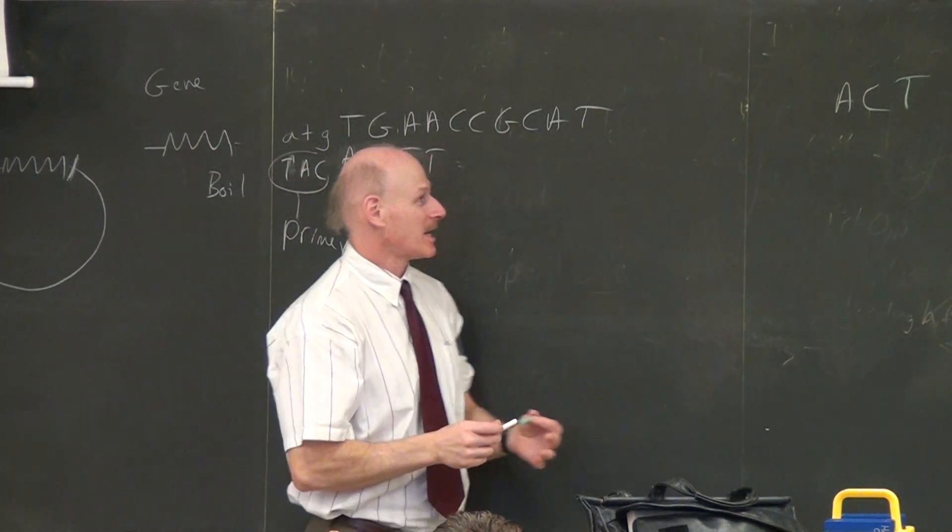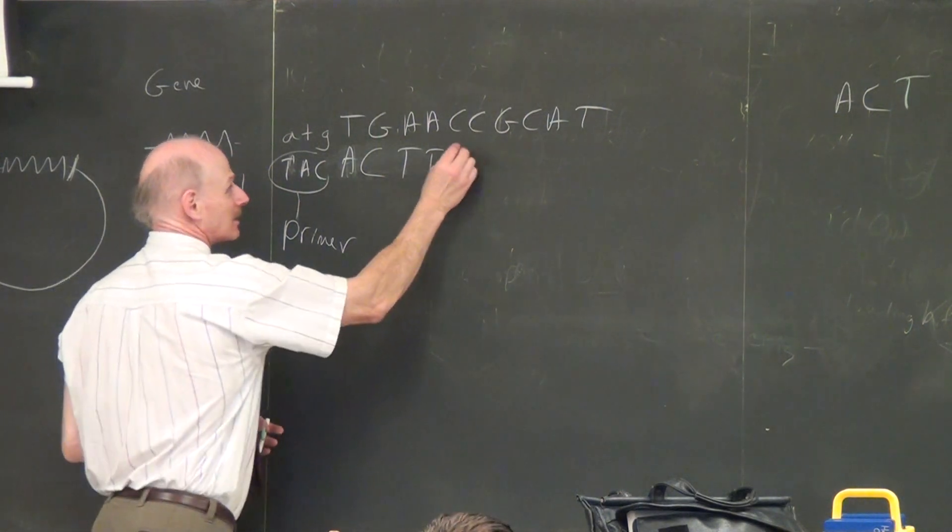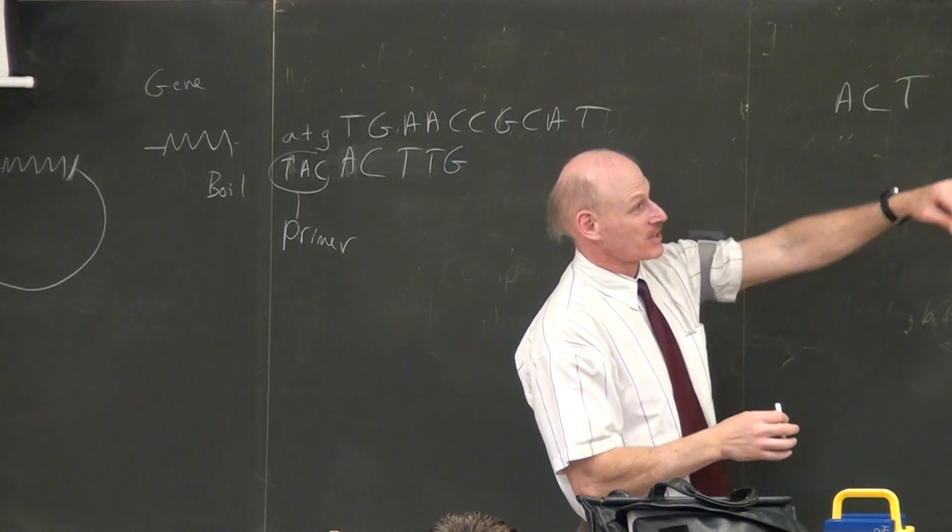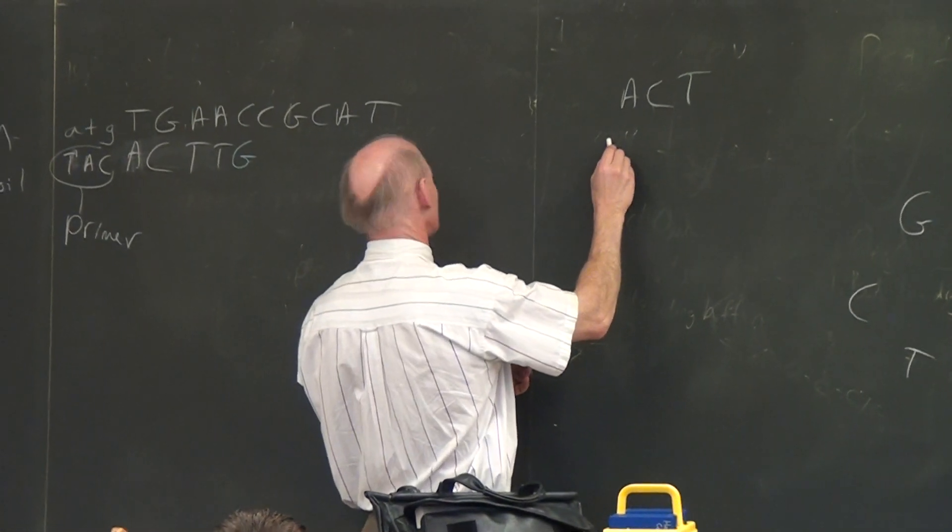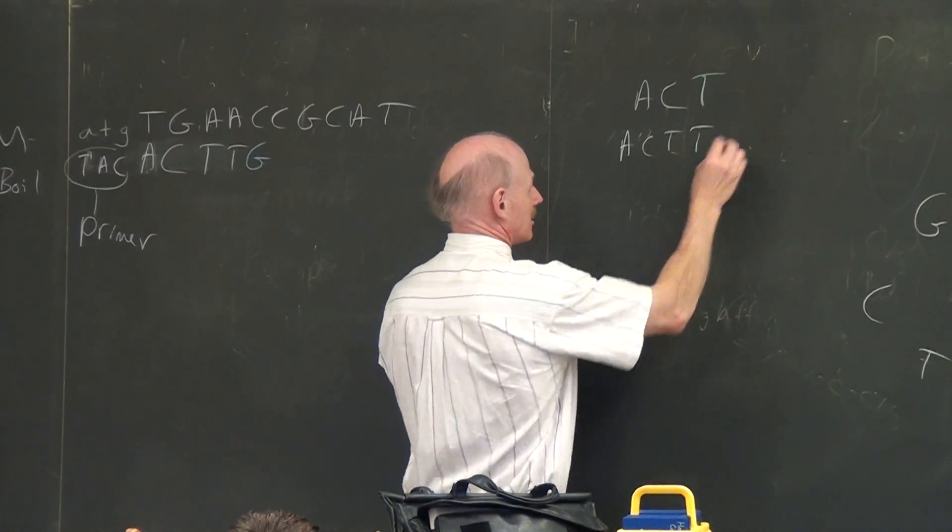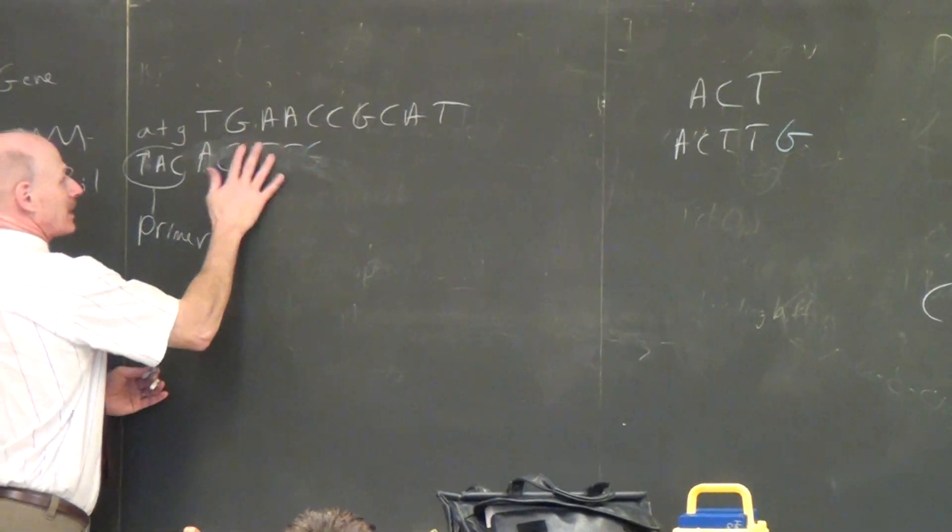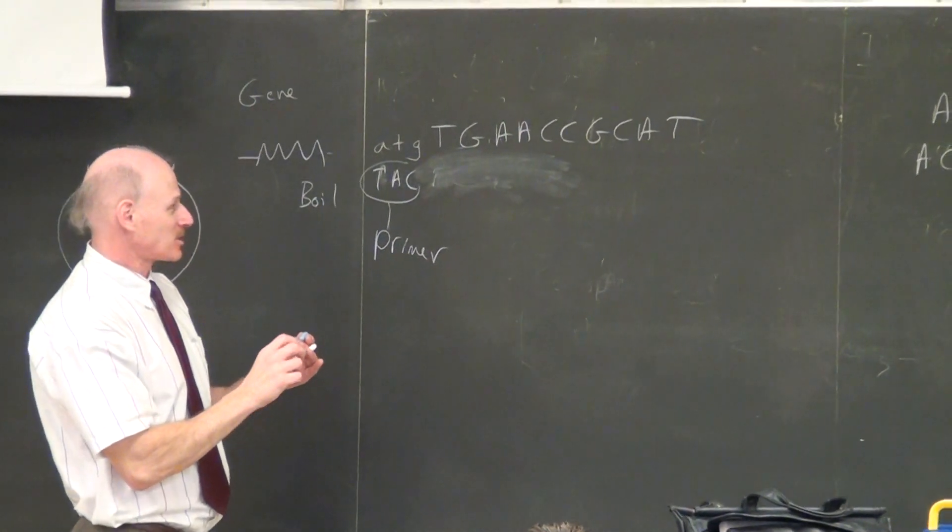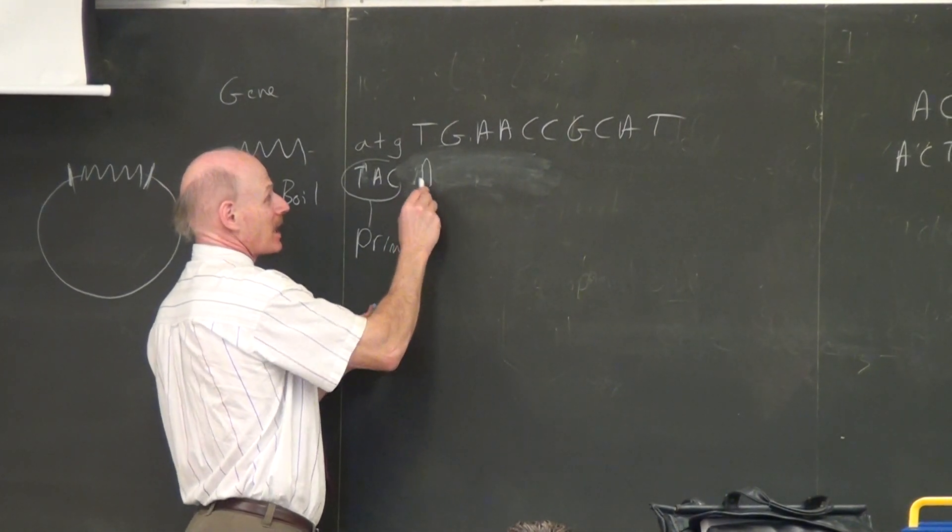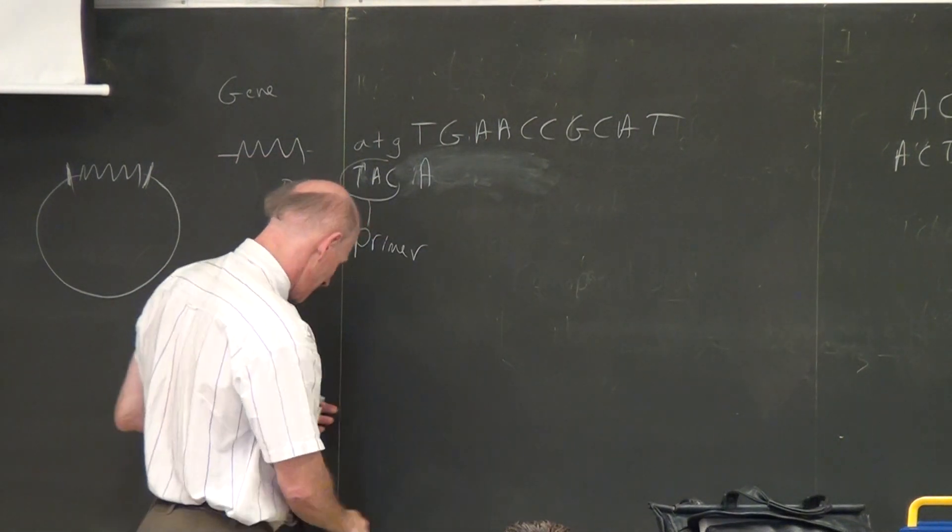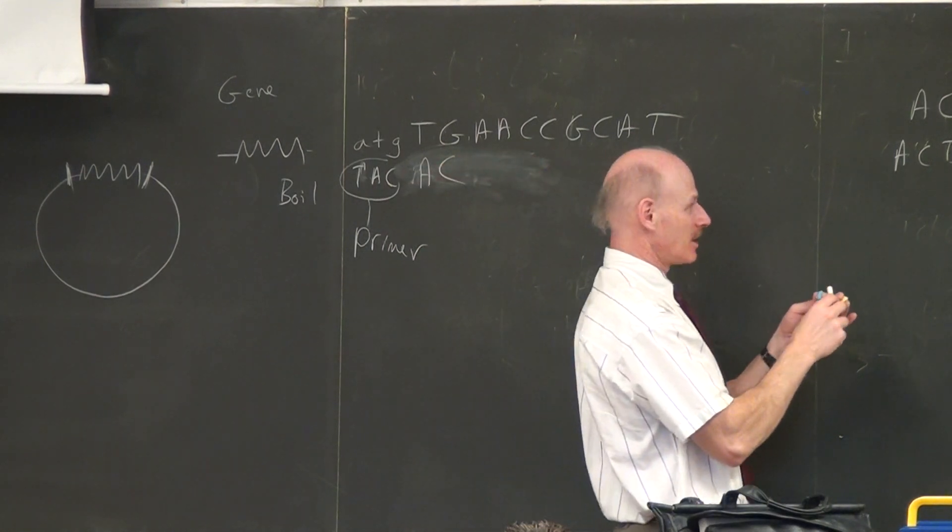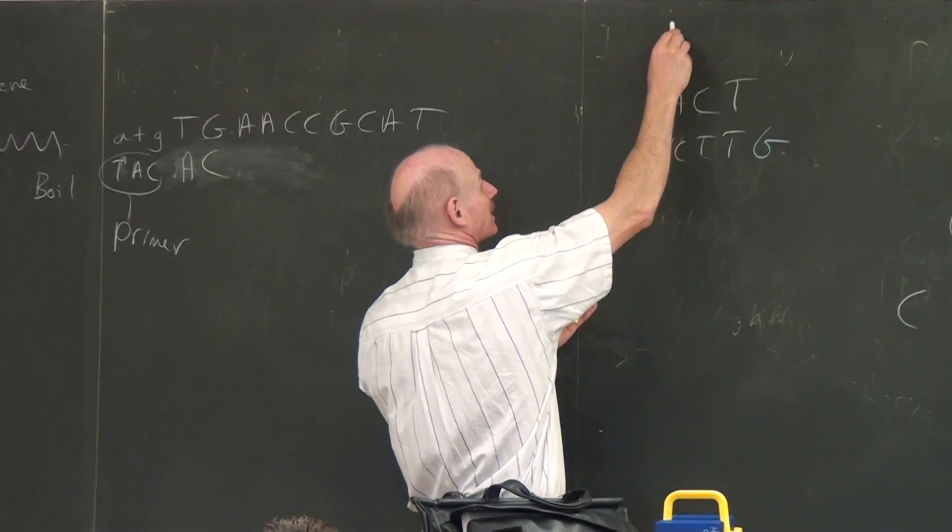And then it reaches blindly, and let's say it gets one of the colored G's like that. Well, that terminates that chain because it can't add any more. It's one of these dideoxys. And so now we're going to have ACTTG. And that's the end of that chain. But then the enzyme will start all over from scratch. And basically the same process. Maybe it gets that A right. And now maybe it grabs a dideoxy C right there. And so that's the end of that chain. So if you think about it, we're going to end up with a collection of nucleotides that look something like this.